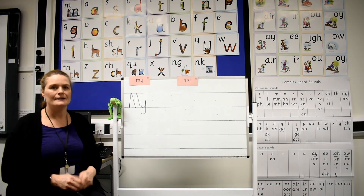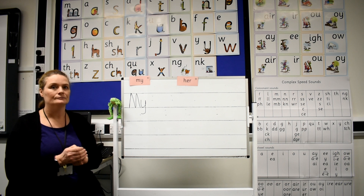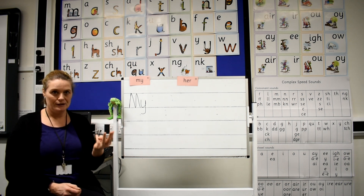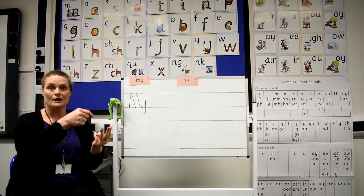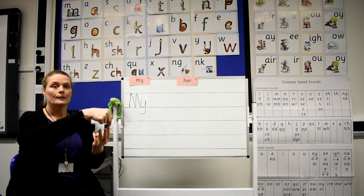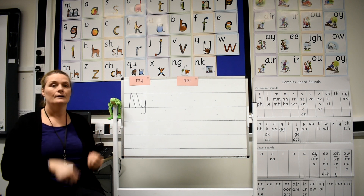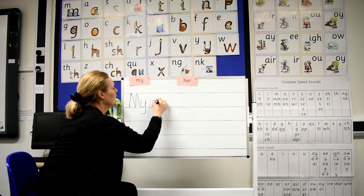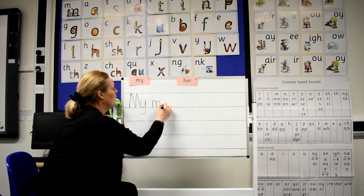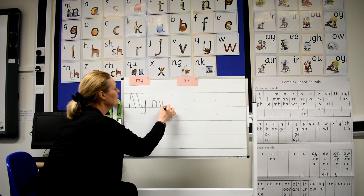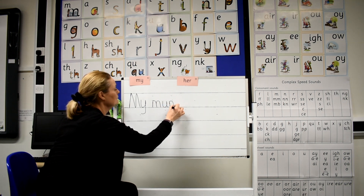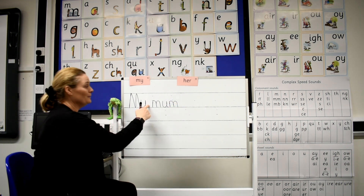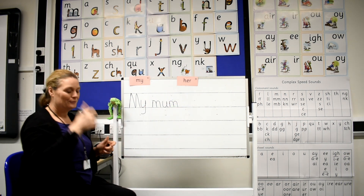Fred fingers — let's sound out mum. Show me your Fred fingers. Well done, three Fred fingers. Let's sound it out, pinching our Fred fingers: M, A, M. Well done. Did you remember your finger space as well? Well done.